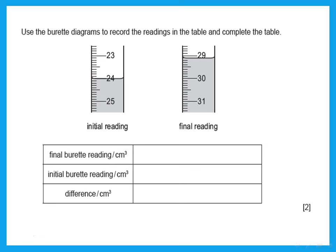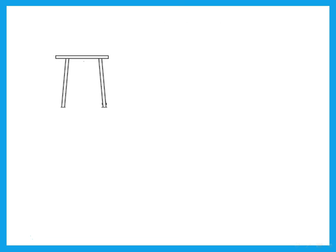So the final reading is the one on the right. Please don't put the final in place of the initial. The final here is 29.1, not 30-point-something. The initial reading — that's the one on the left — is 24.0. And of course, if he wants the difference, that's just the larger one minus the smaller.